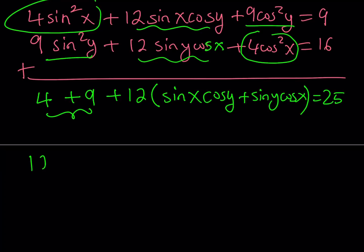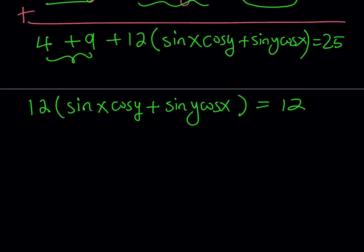So I'm basically getting 12 times this quantity, sine x cosine y and I'll tell you what it is in a little bit, plus sine y cosine x equals 12. We can divide both sides by 12, and we end up with a simpler expression. But now, what is that expression equivalent to?